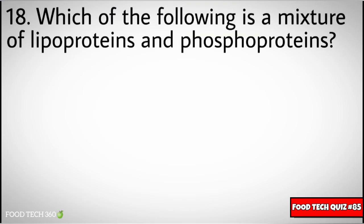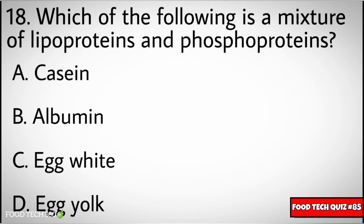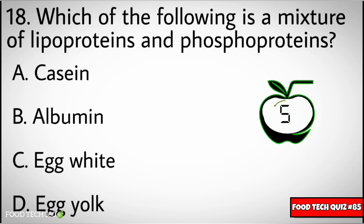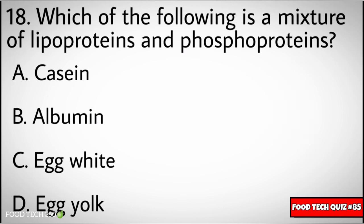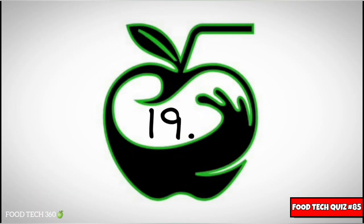Question number eighteen: which of the following is a mixture of lipoproteins and phosphoproteins. Options: A) casein, B) albumin, C) egg white, D) egg yolk. Correct answer: D) egg yolk.